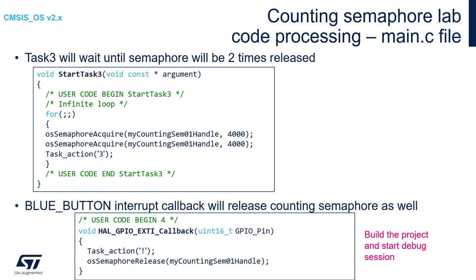In the Task3 function body we need to put two OSSemaphoreAcquire functions one by one. There is no single function waiting for multiple instances of the same semaphore. In case you would like to synchronize a task with more than one component — another task or interrupt — it is better to use other techniques like thread flags or event flags. Please have a look at the dedicated parts of this session for more details.